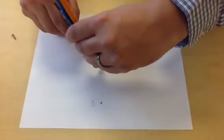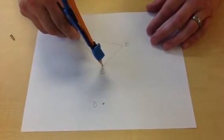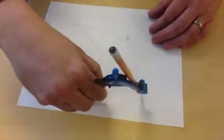You want to stretch your compass to measure the length of that side. So I've found the length of AC. So now you go over to point D and you make an arc.